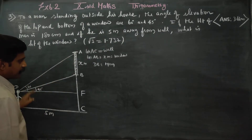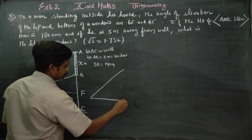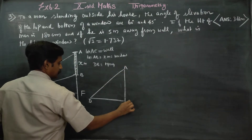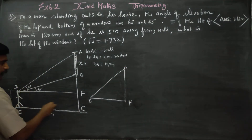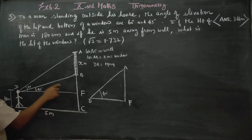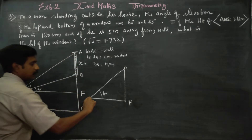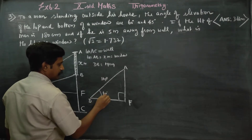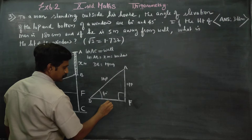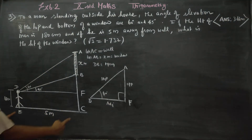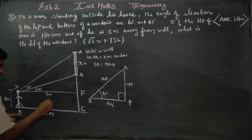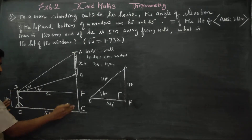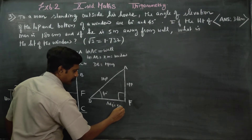We'll take triangle DAF. The angle is 60 degrees. The wall is 90 degrees. This is the hypotenuse, this is the opposite side, and this is the adjacent side. The distance to the wall is 5 meters.